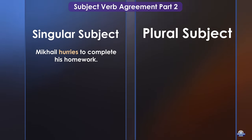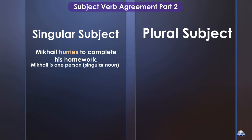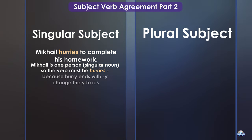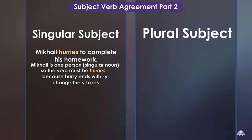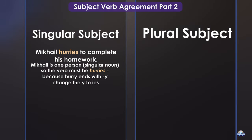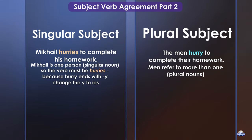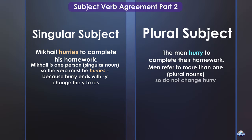Mikhail hurries to complete his homework. Mikhail is one person, a singular noun, so the verb must be hurries. Because hurry ends with Y, change the Y to IES. The men hurry to complete their homework. Men refer to more than one — plural nouns — so do not change hurry.